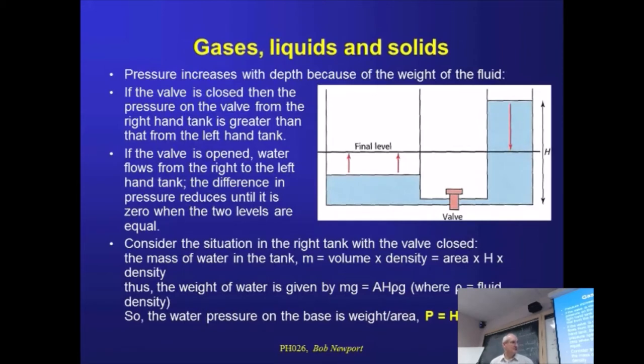So these two things we can think of, rho and g, we can think of in this case as constants. And it's the height that's varying. And the same will be true on this side. It would just be the height, whatever the height on this side is, multiplied by rho multiplied by g. Well, rho and g are the same, both sides. It's the same fluid. So if we open this valve, we have to get to the case where the pressure on both sides is equal. Otherwise, there's going to be a flow of fluid.